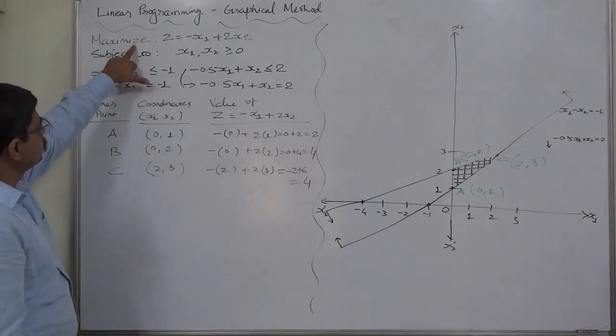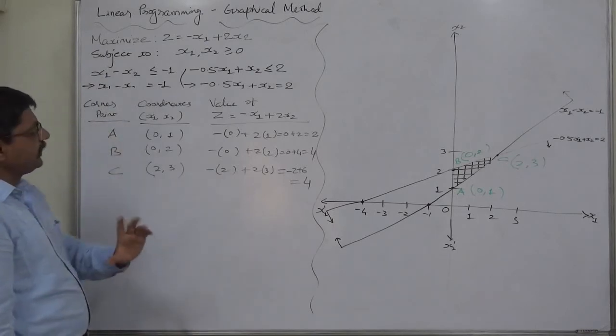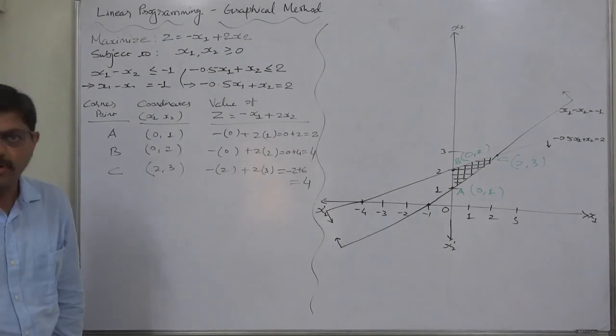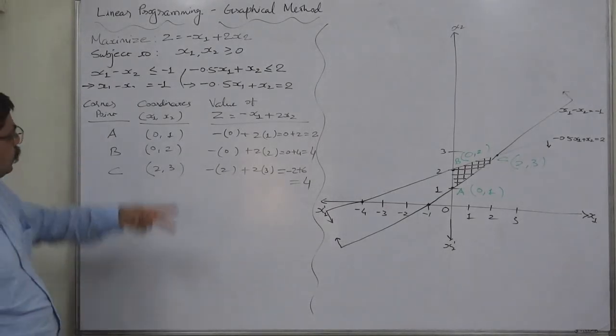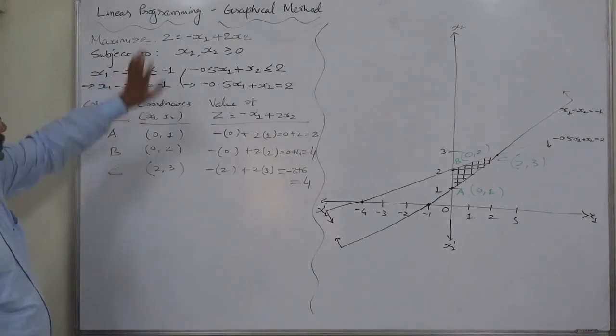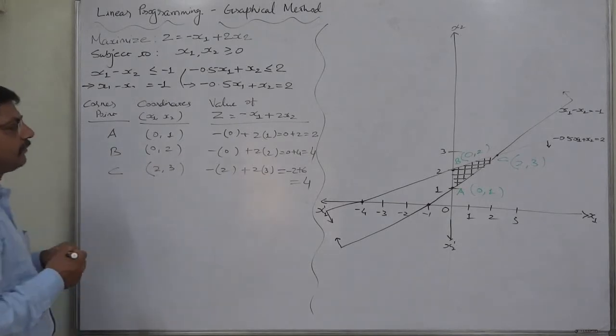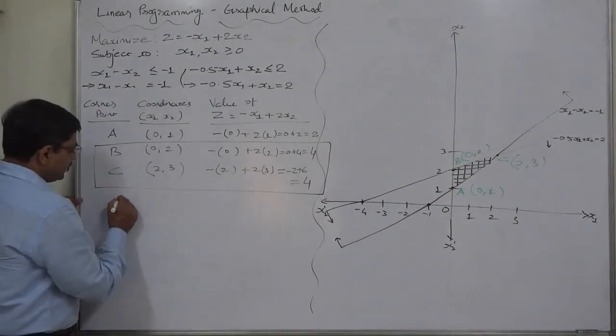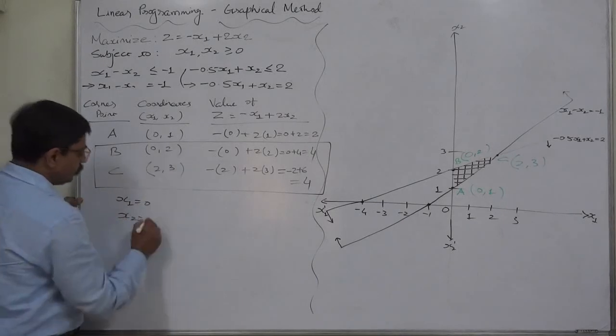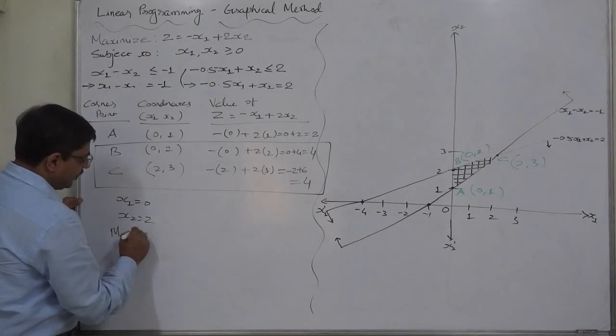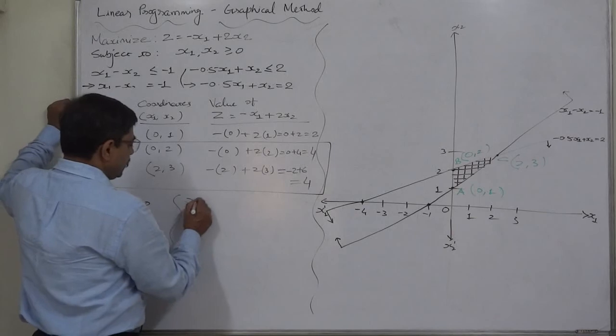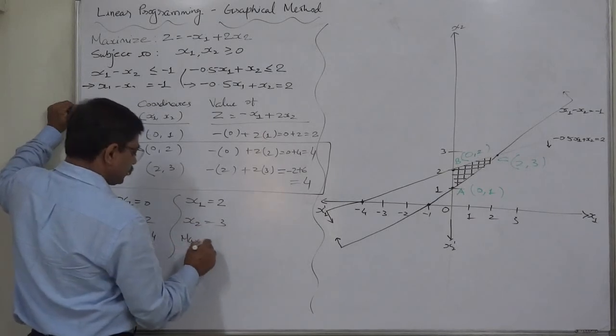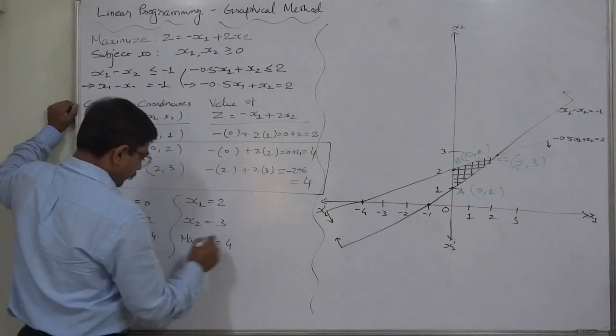Objective is maximized, so we should select the corner point with the maximum value of the objective function. The maximum value is 4, and 2 corner points are giving maximum value 4 of the objective function. That means there are 2 possible optimal solutions of this problem. So we can say that this is a problem having multiple optimal solutions. The first solution is x1 equals to 0, x2 equals to 2, and maximum value of objective function z is 4. Another possible solution is x1 equals to 2, x2 equals to 3, and maximum possible value of z equals to 4.